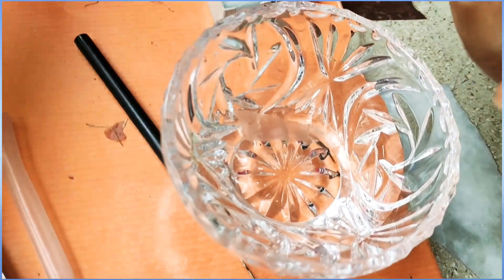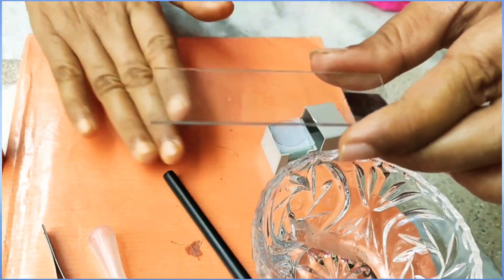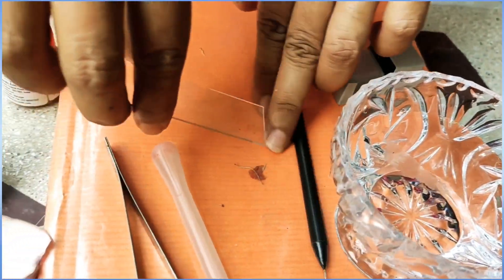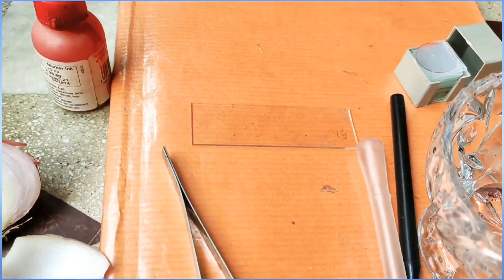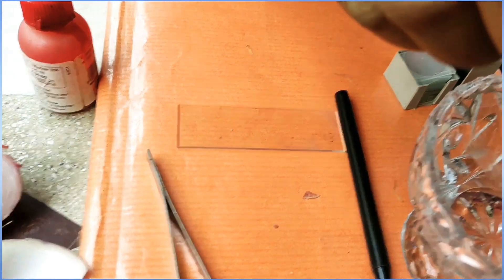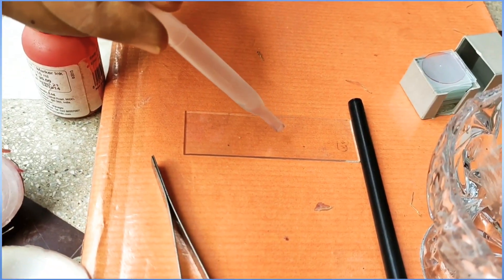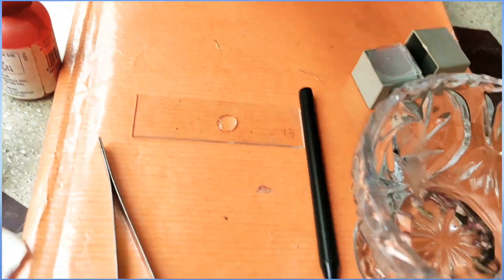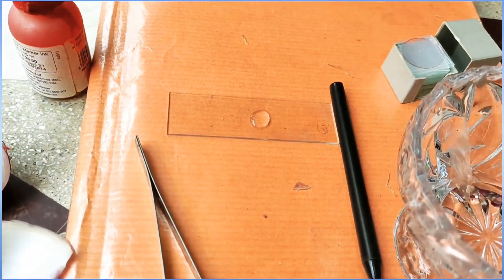Alright, now next what you have to do is that you have to take one slide, a clean slide, and this clean slide you're going to place on a surface. And with the help of this dropper, you just take one drop of water and put it in the center of the slide like this.